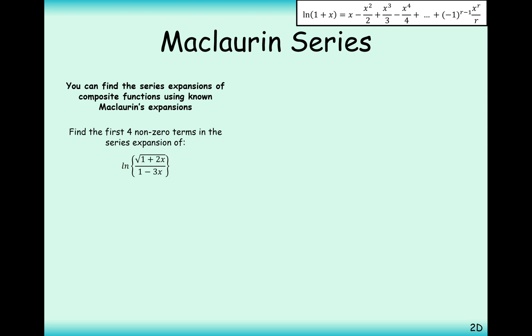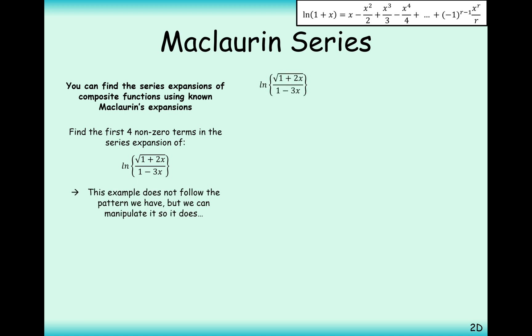Let's do another one. This one's more complicated: ln of the square root of (1+2x) over (1-3x). This is a classic exam question. What we have to do first is get it into the ln(1+x) form so that we can use the Maclaurin series expansion, but it's not currently in that form.